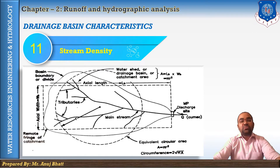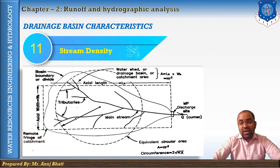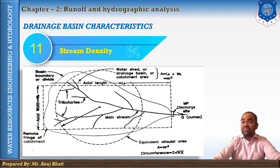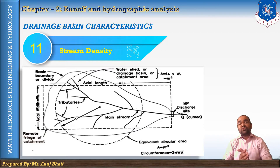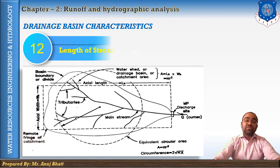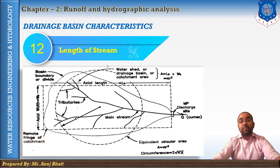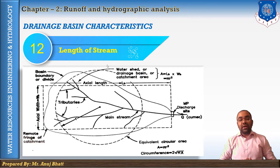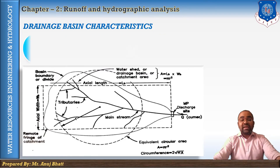The next is stream density — the ratio of the number of streams in a catchment to the catchment area in kilometer square. If N is the number of streams and A is the area, then stream density = N/A. This is also known as stream frequency. The next characteristic is length of the stream — the length measured along the main stream from the basin outlet to the remotest point on the basin boundary is called the watershed length.